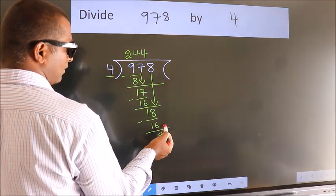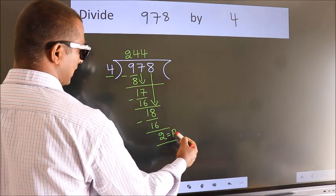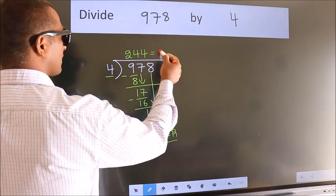No more numbers to bring down, so we stop here. This is our remainder. This is our quotient.